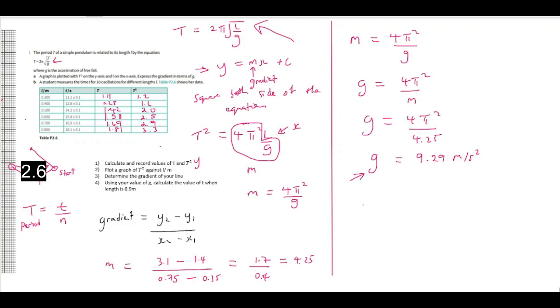calculate the value of T when the length is 0.9. So, you would go back to this equation that says T, or the period, is equal to 2 pi times the square root of L divided by G. And what you would simply do is to plug in those values, right?